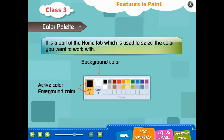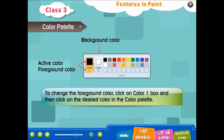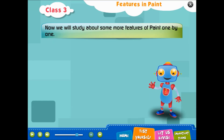The color palette is a part of the Home tab which is used to select the color you want to work with. The Color 1 box on the left side shows the active or foreground color. To change the foreground color, click on the Color 1 box and then click on the desired color in the color palette. The Color 2 box is the background color — the default color of any new image. To change the background color, click on the Color 2 box and then click on the desired color in the color palette.